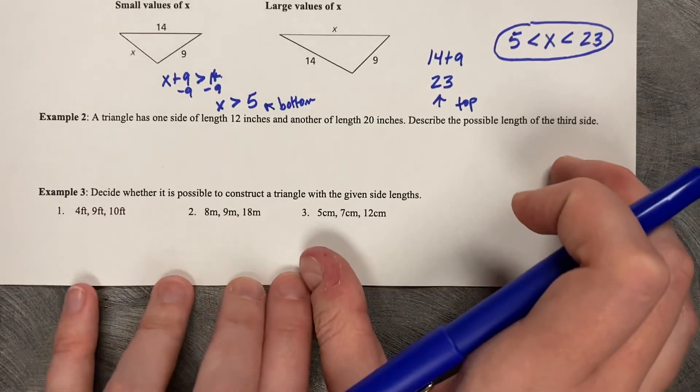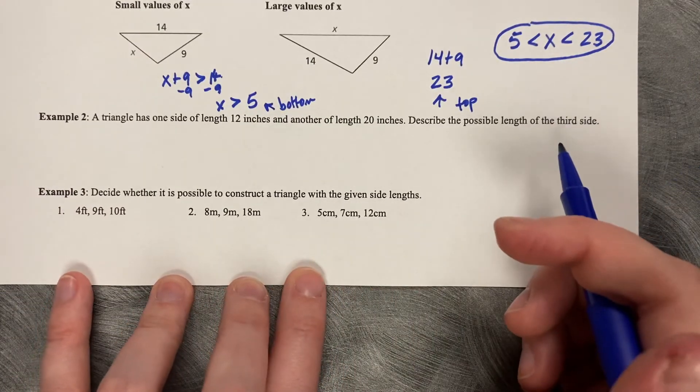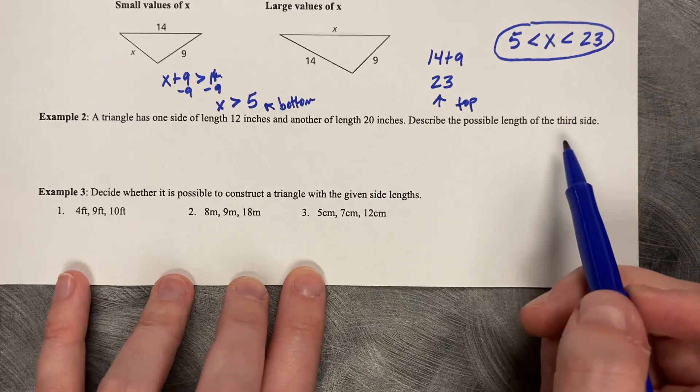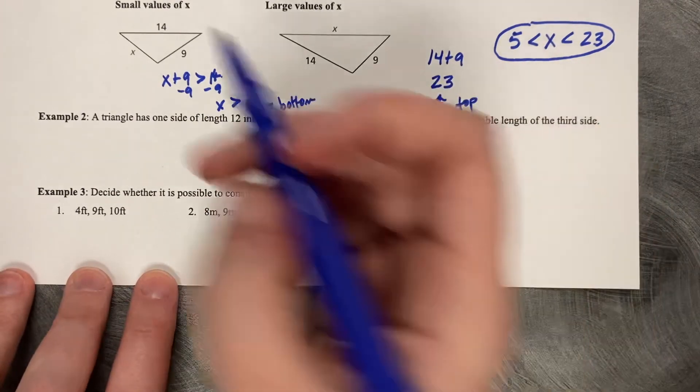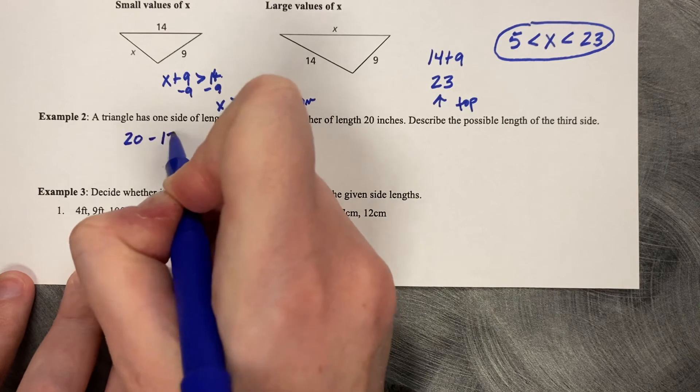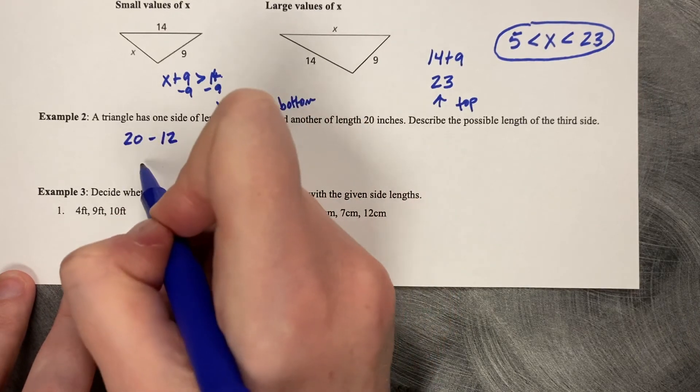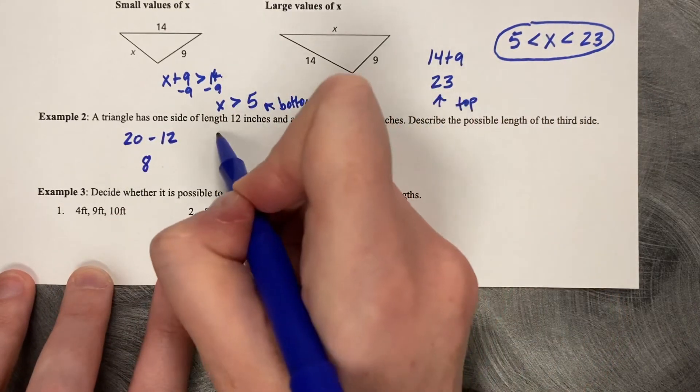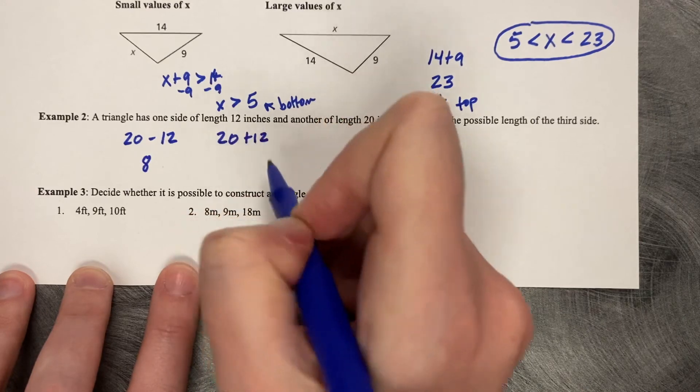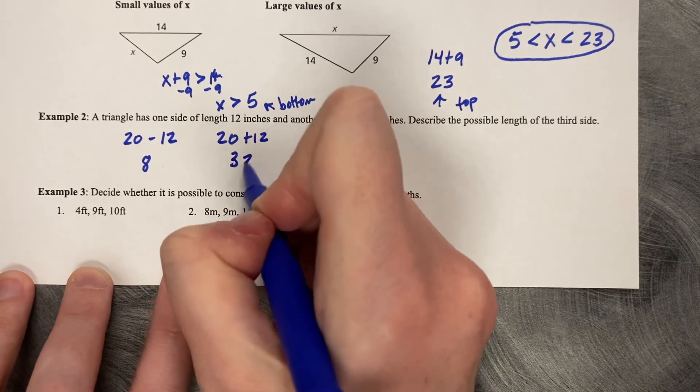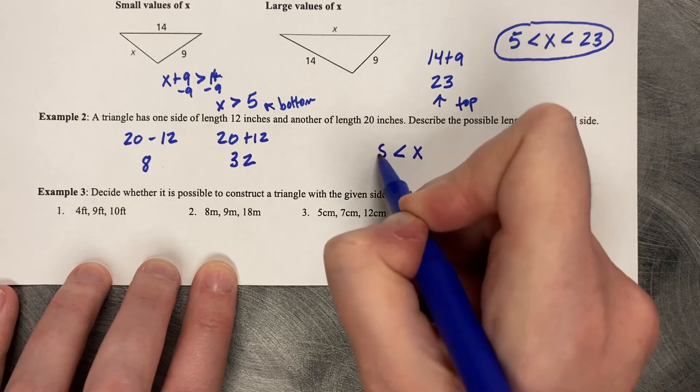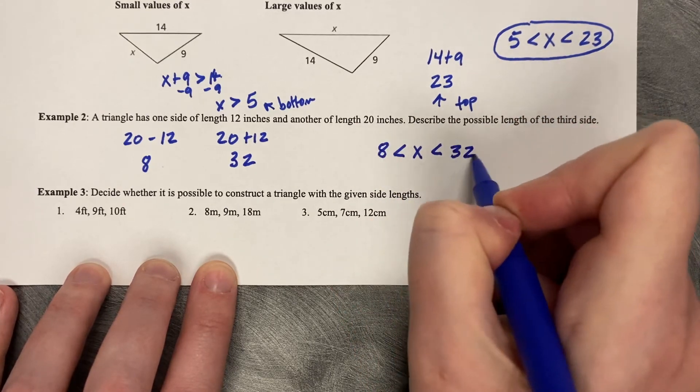So let's try it on example number 2. A triangle has one side length of 12 and another of 20. Describe the possible lengths. So let's do our subtraction first. So 20 minus 12 gives me my bottom end of 8. And 20 plus 12 gives me my top end of 32. So x must be greater than 8 but less than 32.